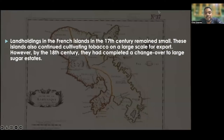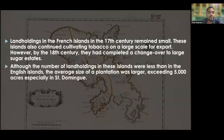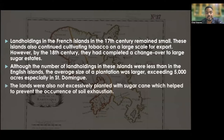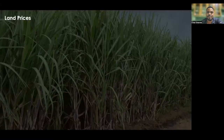Land holdings in the French islands in the 17th century remained small, and these islands continued cultivating tobacco on a large scale for export. However, by the 18th century they had completed a changeover to large sugar estates. Although the number of land holdings in these islands was less than in the English islands, the average plantation size was larger, exceeding 5,000 acres especially in Saint-Domingue. The lands were also not excessively planted with sugarcane, which helped prevent soil exhaustion — again, the French seemingly managing the revolution better than the British.